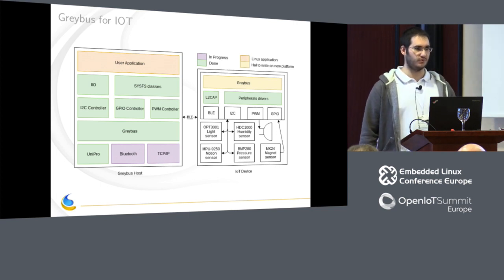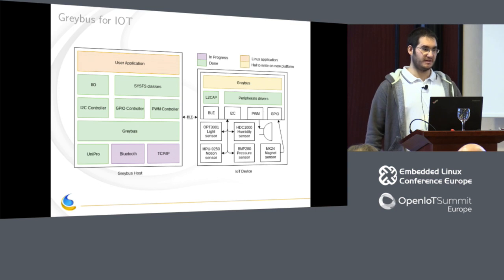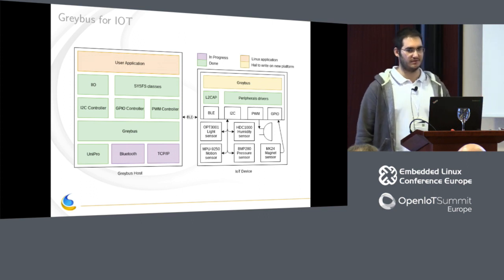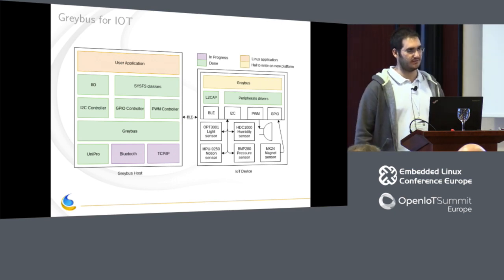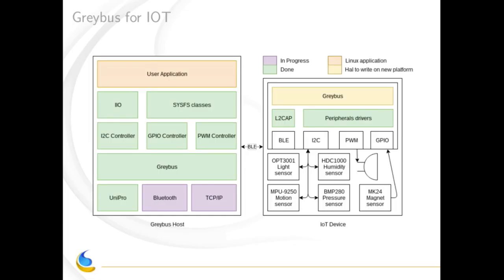GPIO has set value, set direction, things like that — so even for kernel people it could be easy to implement it in firmware. On the host side, except for the IoT changes I've made, there is nothing to do. Greybus will do everything. For our sensors, the I2C controller will be created when we start the module, and then you'll be able to bind the driver and use IIO to access all your sensors. The four sensors here are already supported by Linux, so nothing to do except bind the driver to IIO.